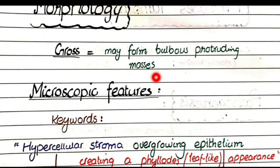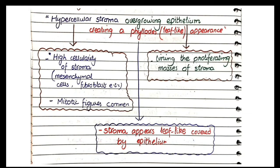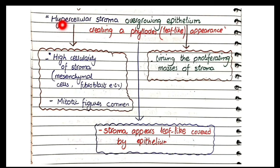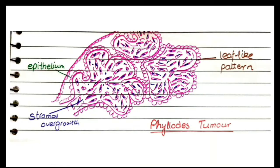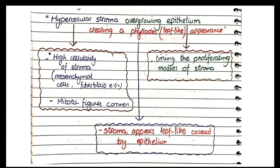For the microscopic features of phyllodes tumor, the keywords are: hypercellular stroma overgrowing epithelium, creating a phyllodes (leaf-like) appearance. Hypercellular stroma means the proliferating neoplastic stroma is highly cellular, containing many mesenchymal cells and fibroblasts, with very frequent mitotic figures indicating rapid proliferation. This high cellularity is the key feature differentiating phyllodes tumor from fibroadenoma, which has low stromal cellularity.